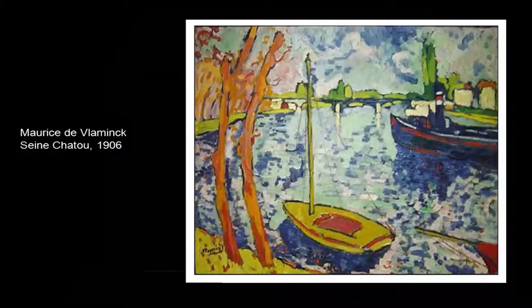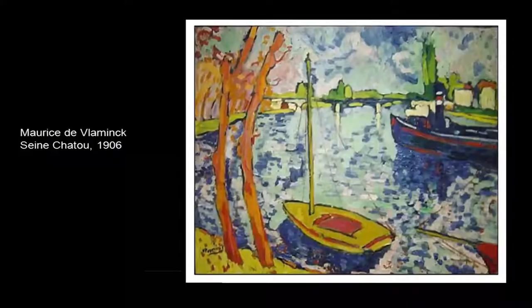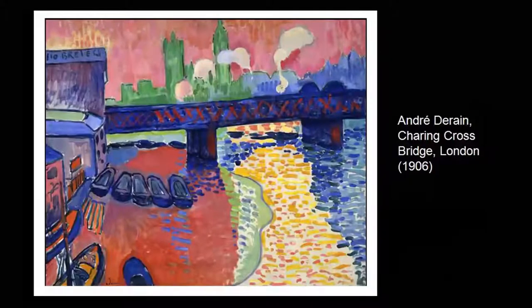Artists like Derain and Vlaminck figured out a certain intuitive way of juxtaposing various colours — however illogical it might look at face value, it is not absolutely without reason. They have their own logic and intuitive rationale, something the Fauves built up over the years through their many paintings and a consistent practice.